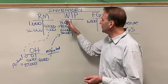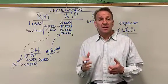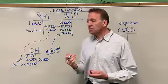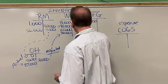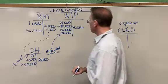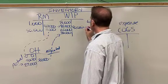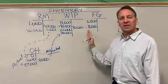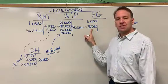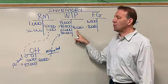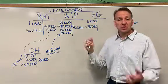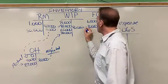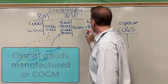So now you can see these are the items that are in work in process. Now, some of these items that we're working on will be finished. They'll be done. So let's assume that $90,000 worth of items were completed. So then that needs to transfer over into finished goods.